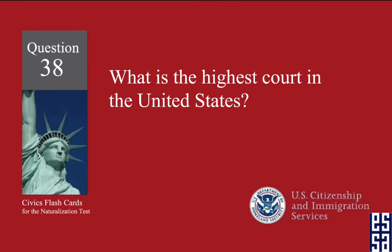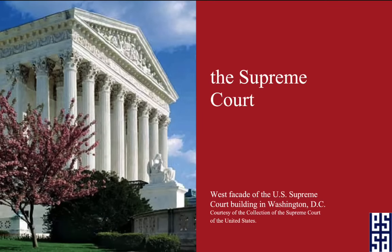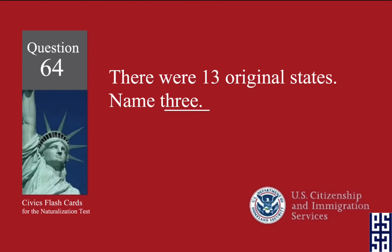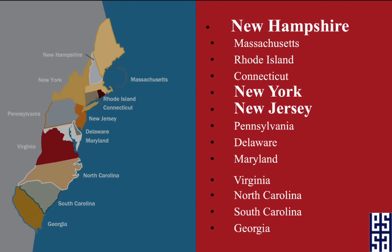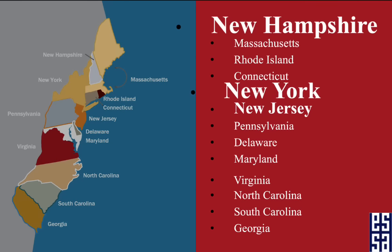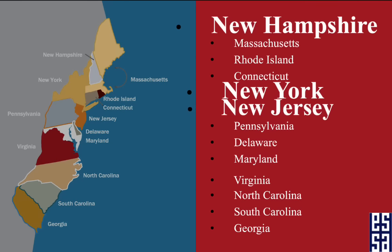What is the highest court in the United States? The Supreme Court. There were 13 original states — name three. New Hampshire, New York, and New Jersey.